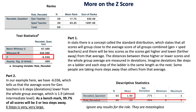The best way to visualize the Z score is to think about the concept of the standard distribution: scores will group close to the average score for all groups combined — in this example, gen and SPED teachers — and there will be fewer scores as they get higher, and also fewer scores as they get lower or further away from that average.